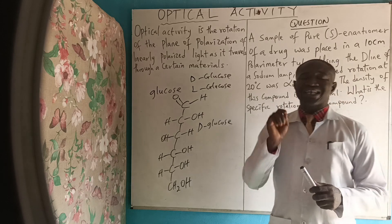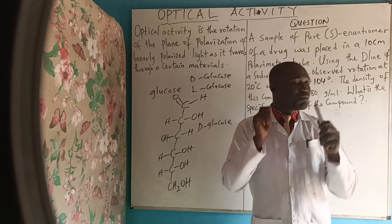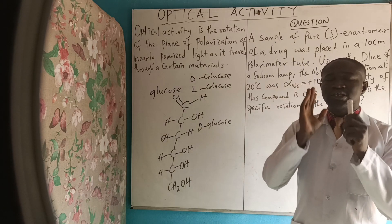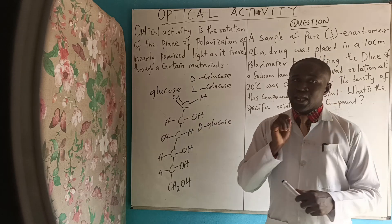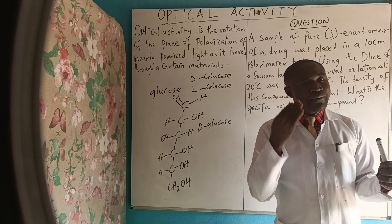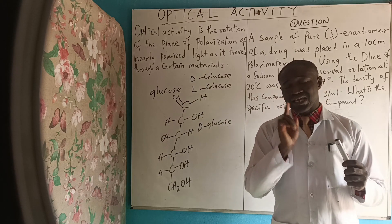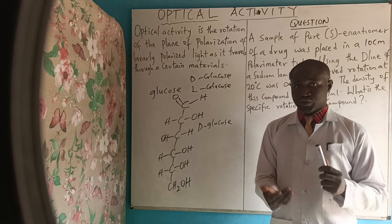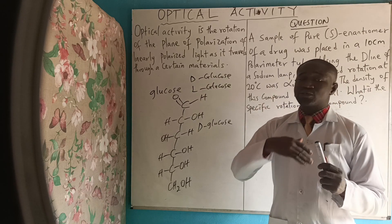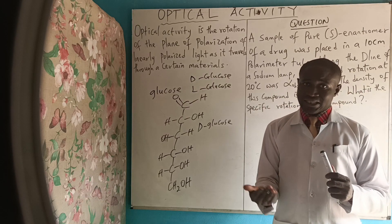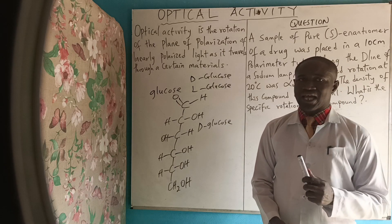A chiral center is an atom in a molecule that is bonded to four different chemical species. When you have an atom in a molecule bonded to four different chemical species, we call that a chiral center. If a molecule has one chiral center, you say it has a chiral center; if it has more than one, you say it has chiral centers. Glucose is noted to have four chiral centers.